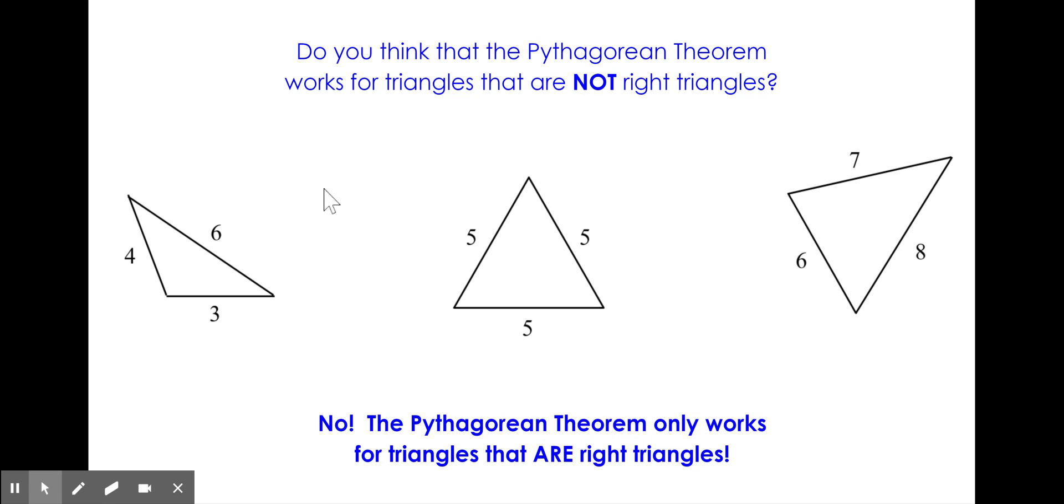First, you don't know which side is A, B, or C, and 9 plus 16 does not equal 36, 25 plus 25 obviously does not equal 25, and 36 plus 49 is much greater than 64.